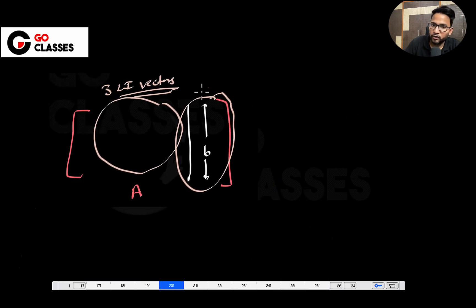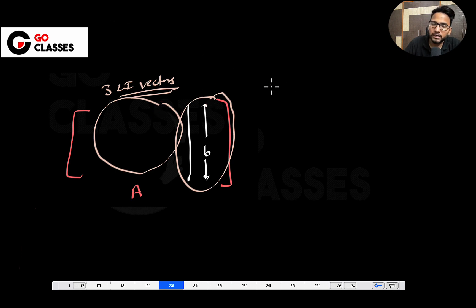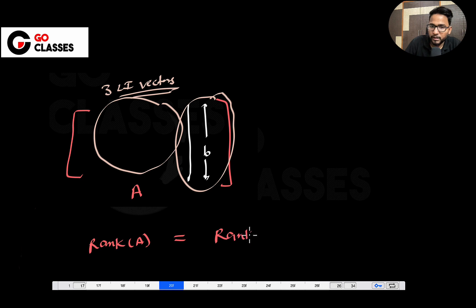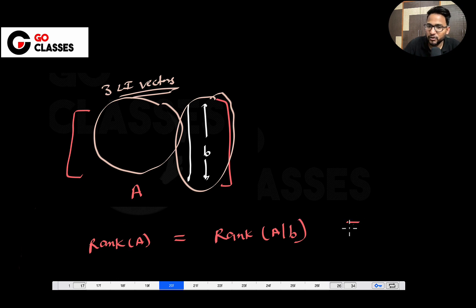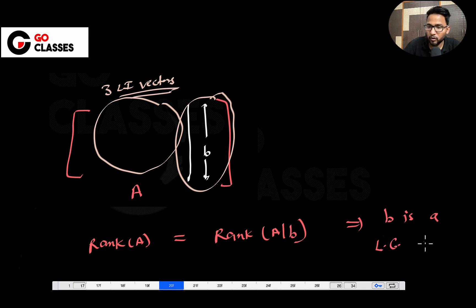If A has three linearly independent vectors and you bring one more vector b, then b is either a linear combination of those three vectors or it is not. If b is a linear combination of these vectors, you are not adding anything — which means rank of A equals rank of [A|b]. So if both ranks are equal, it must mean that b is a linear combination (LC) of the vectors in A.